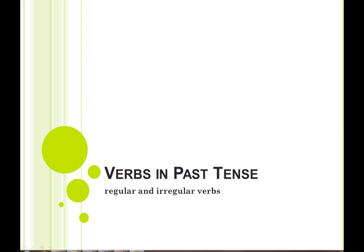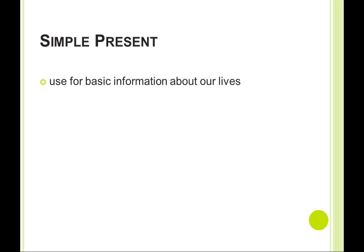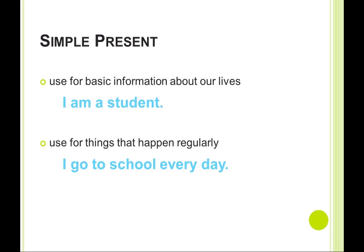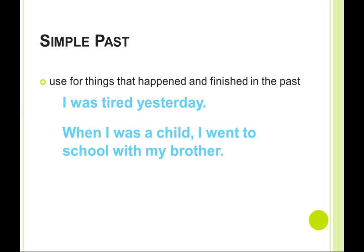Verbs and past tense: regular and irregular verbs. Simple present is used for basic information about our lives — 'I am a student' — or for things that happen regularly — 'I go to school every day.' Simple past is used for things that happened and finished in the past — 'I was tired yesterday' or 'When I was a child, I went to school with my brother.'